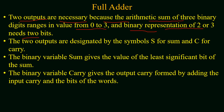The two outputs are designated by the symbol S for sum and C for carry. The binary variable sum gives the value of the least significant bit of the sum, while the binary variable carry gives the output formed by adding the input carry and the bits of the words.